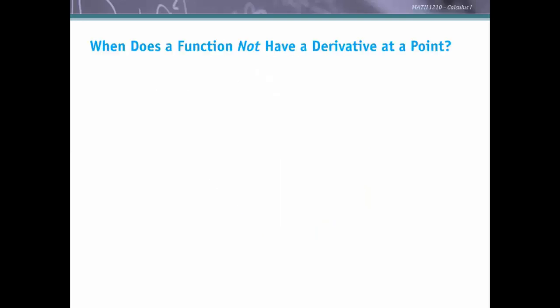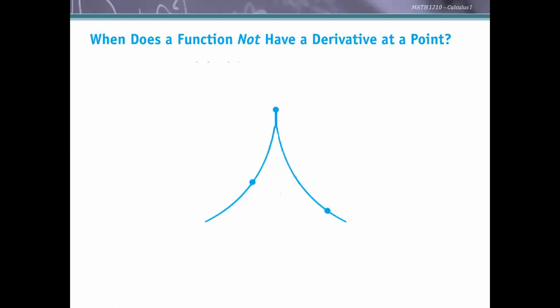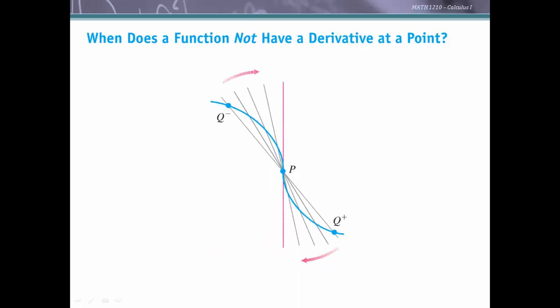So when does a function not have a derivative at a point? First, if the function has a corner: approaching P from the left or right gives slopes of secant lines that do not agree, so the limit of the difference quotient does not exist and the function is not differentiable. Second, a cusp: the slopes of secant lines as we approach P from the left or right become undefined, so the derivative does not exist at a cusp. Third, a vertical tangent: the secant lines approach a vertical line whose slope is undefined, so the derivative does not exist at a vertical tangent.